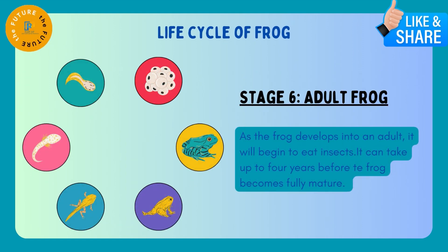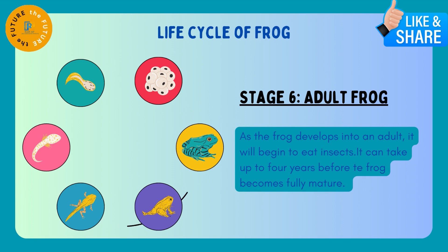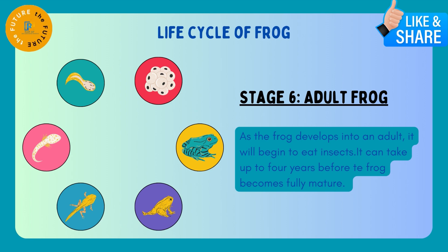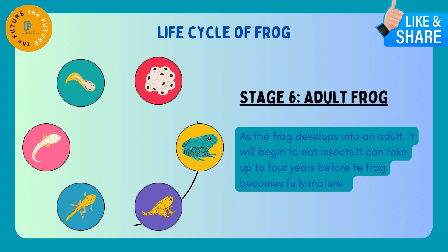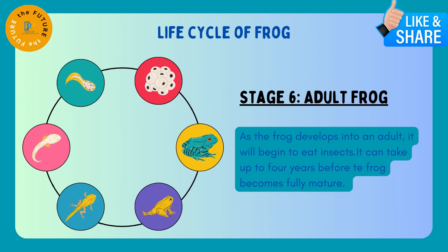Stage 6: Adult Frog. As the frog develops into an adult, it will begin to eat insects. It can take up to 4 years before the frog becomes fully mature. As the frog becomes an adult, the tail is completely finished. Then the frog starts to eat insects — it can catch lizards or other small creatures. It will take about 4 years to become a fully mature frog.